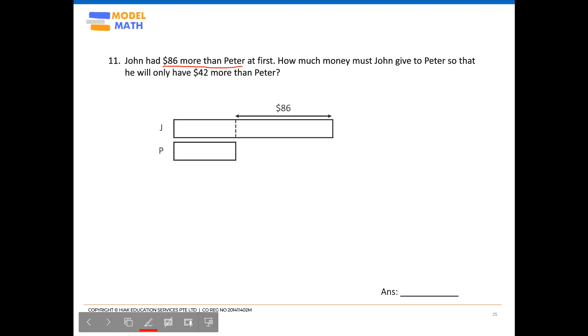So for this question, it actually also states that John will be giving some of his money to Peter. And even after giving a certain amount of money to Peter, he will still have $42 more than Peter.